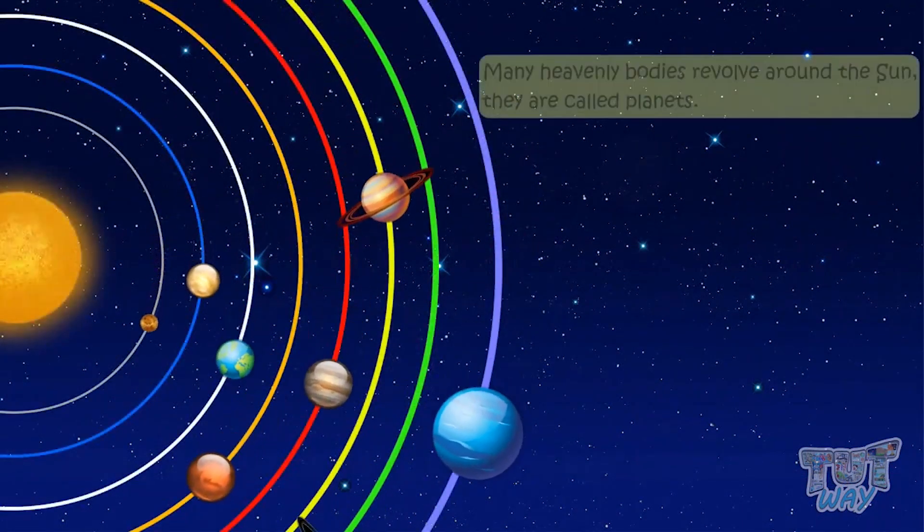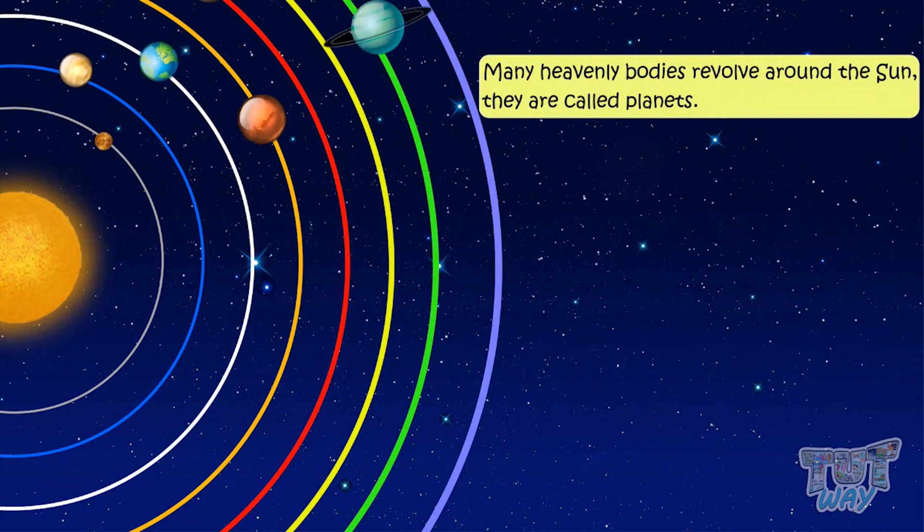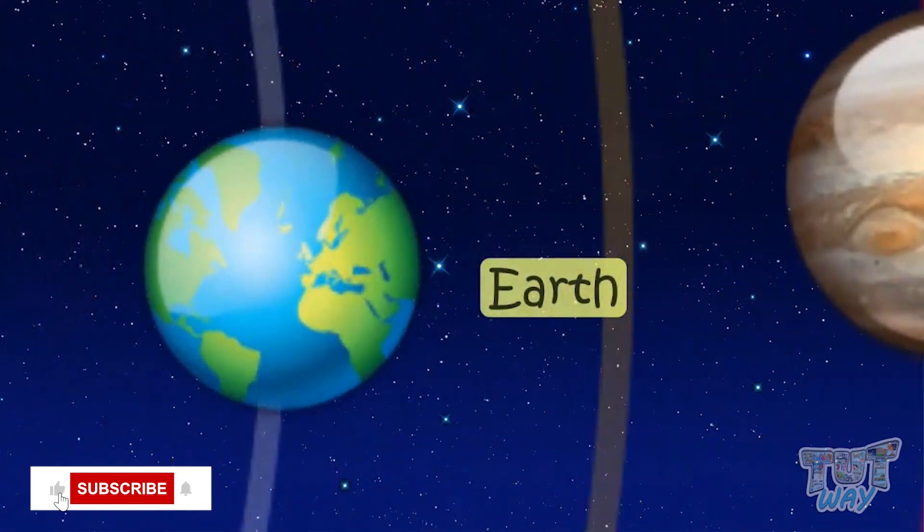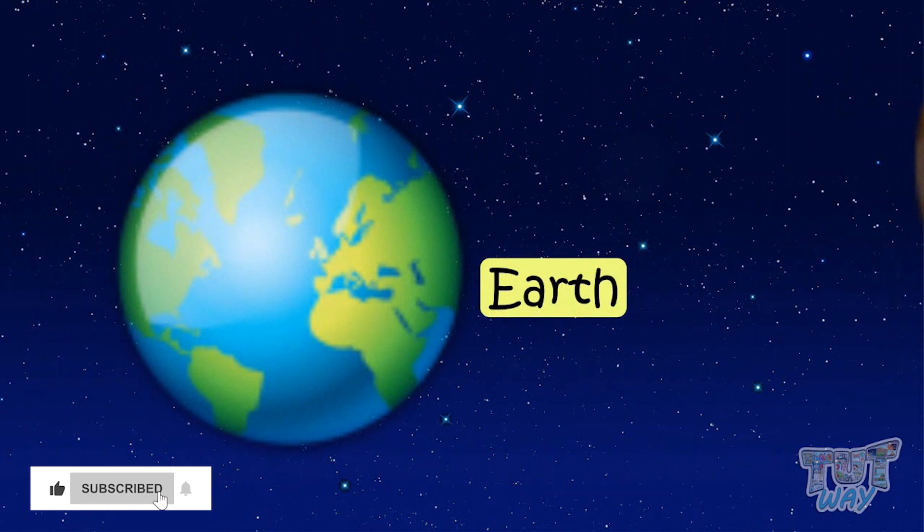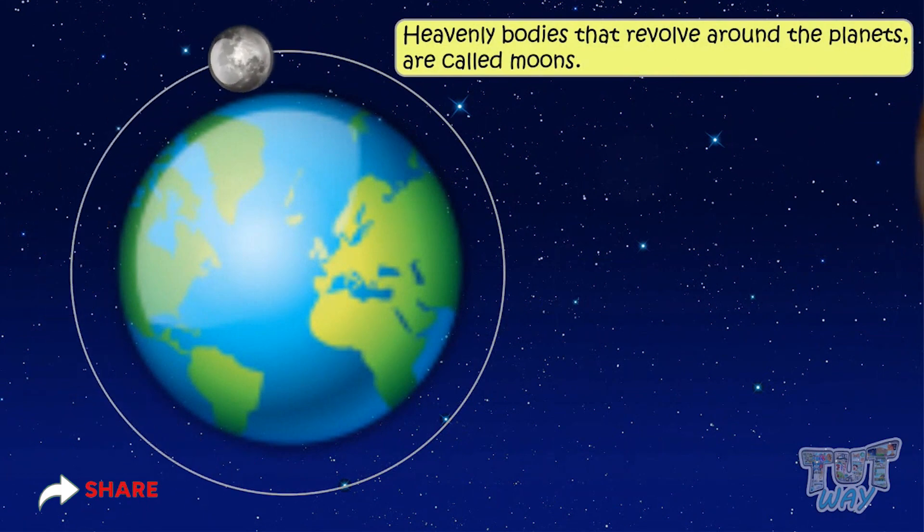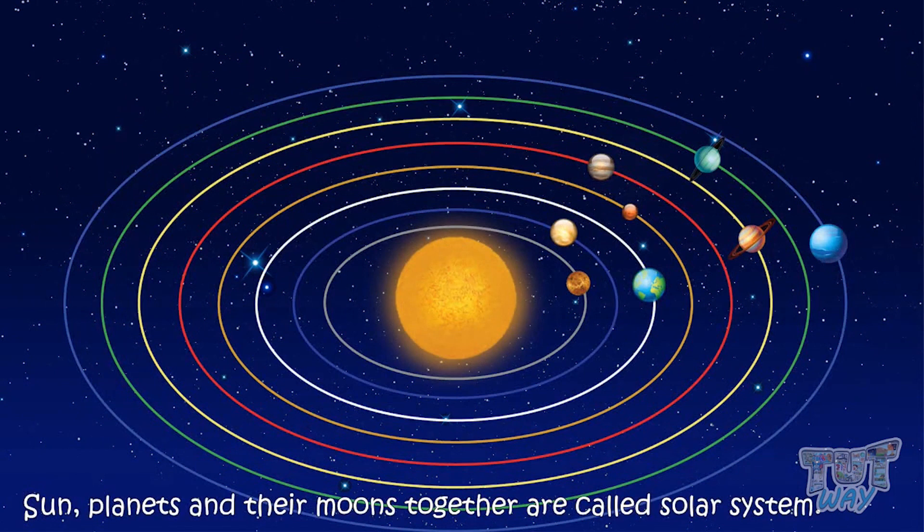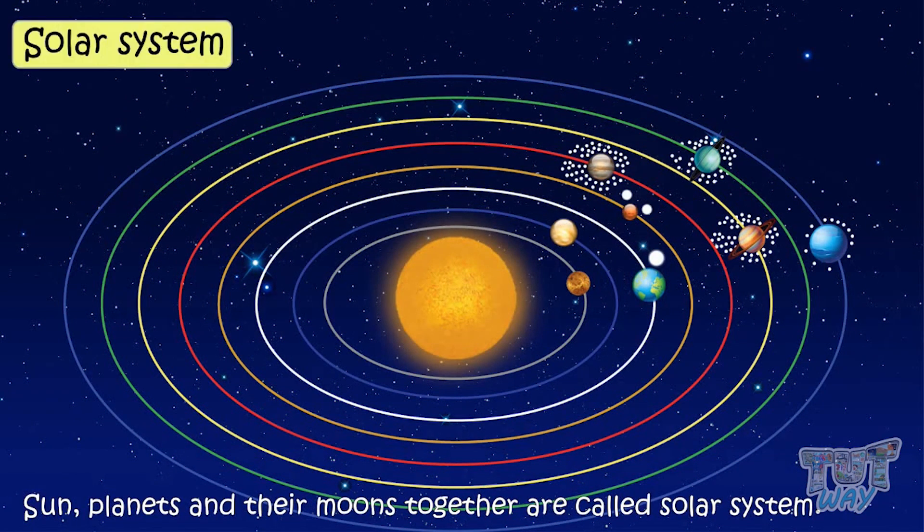Many heavenly bodies revolve around the sun, and they are called planets. Our Earth is one of those planets. Also, some heavenly bodies revolve around the planets, and they are called moons. Sun, planets, and their moons together are called solar system.